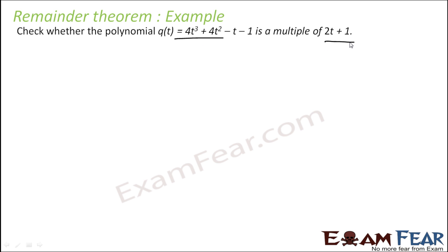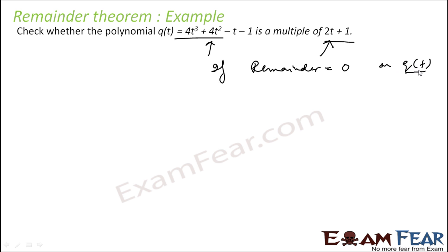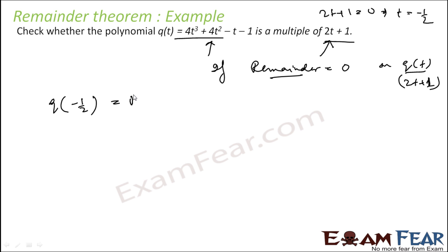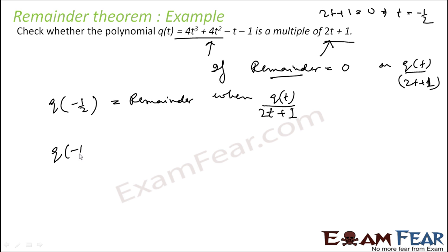Now check whether this polynomial q(t) is a multiple of 2t + 1. As I told you, this polynomial will be a multiple of 2t + 1 if the remainder is equal to zero when you divide q(t) by 2t + 1. As per the remainder theorem, 2t + 1 = 0 gives t = -1/2, so q(-1/2) gives the remainder.